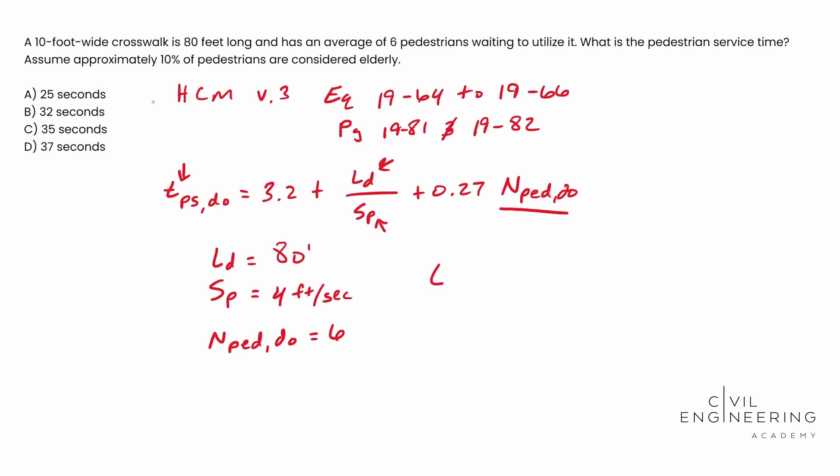So we're going to go ahead and plug and chug. I'm going to write this out right here: T sub PS comma DO. This is going to be equal to 3.2 plus the length of our sidewalk—remember that's 80 feet—over the speed of our pedestrians, that's 4 feet per second. We need to add in 0.27 times the number of pedestrians, that's six.